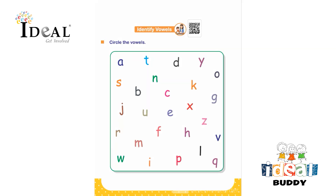Hello everyone. In this page, the child has to identify the vowels. They have to circle the vowels given in the box. First, they will identify the vowels by reading all the letters given. Recall their understanding of consonants and vowels. You can also make them revise by giving some words and letting them identify consonants and vowels.